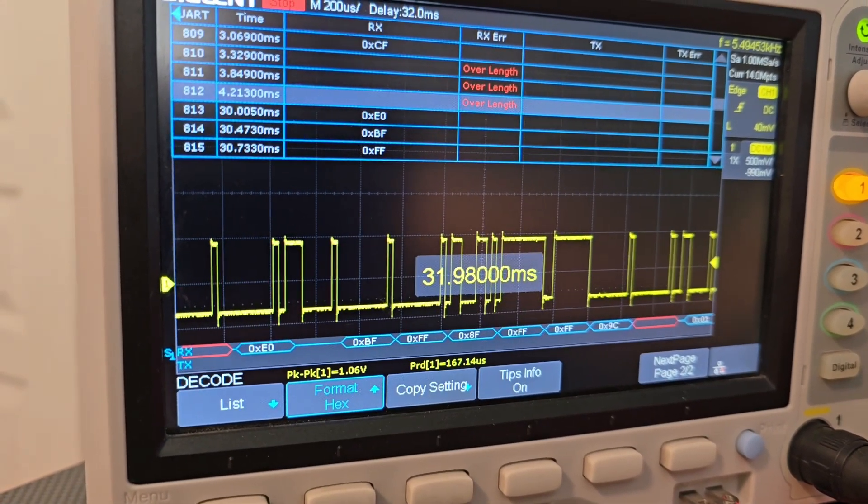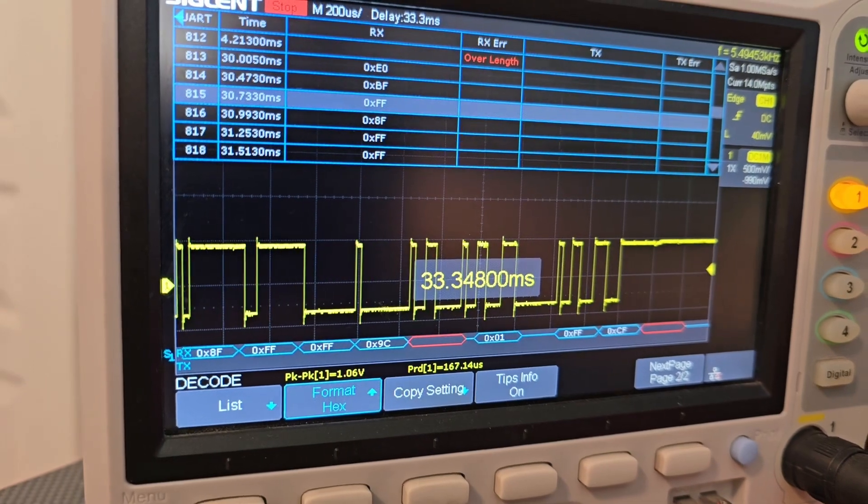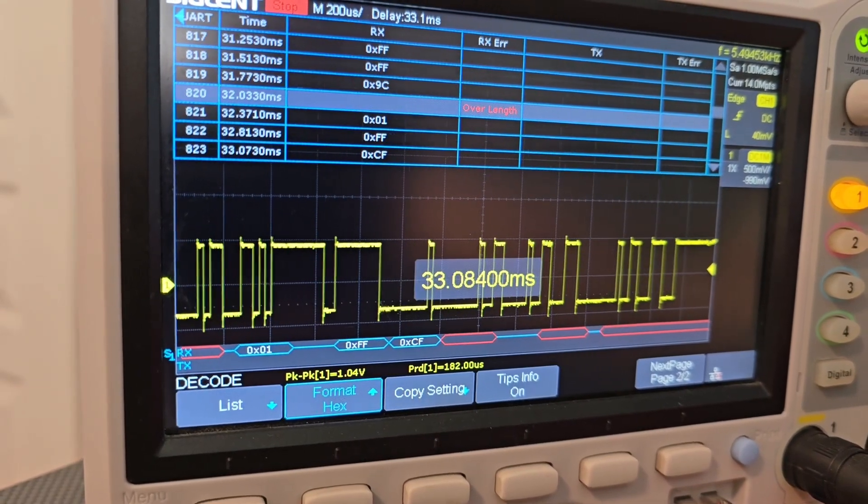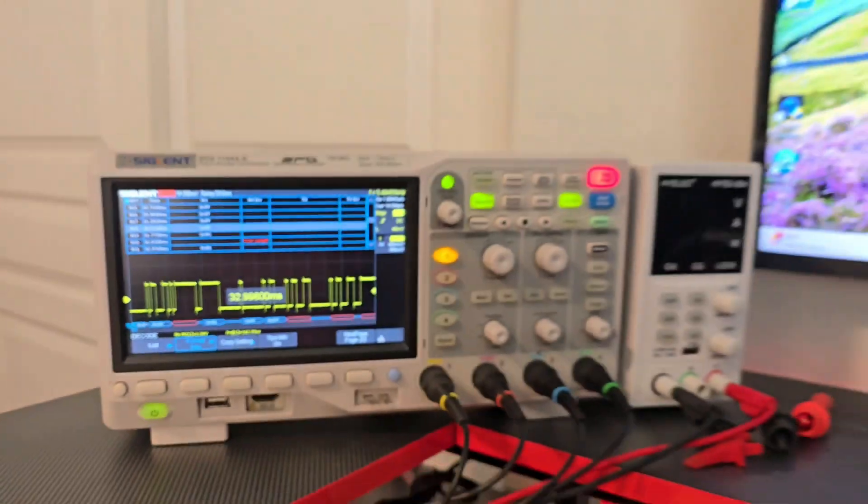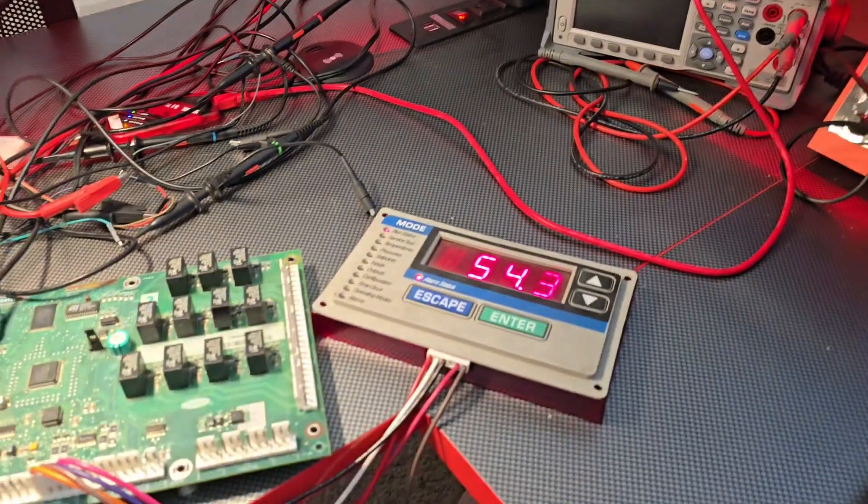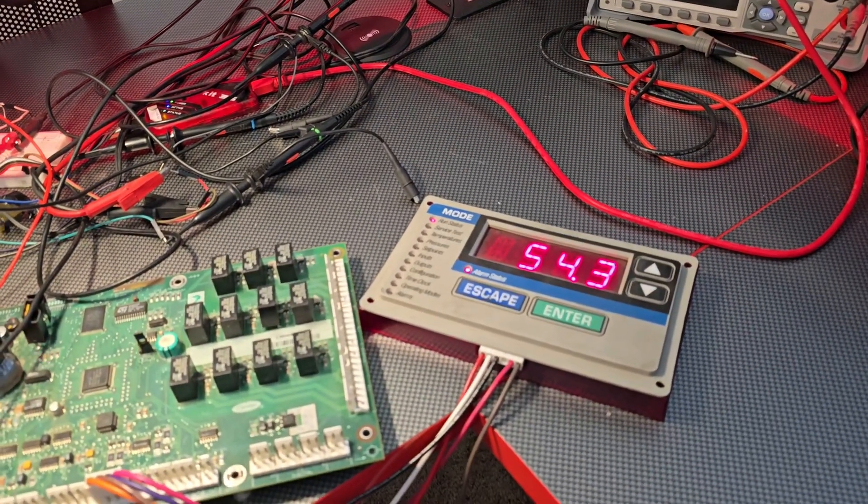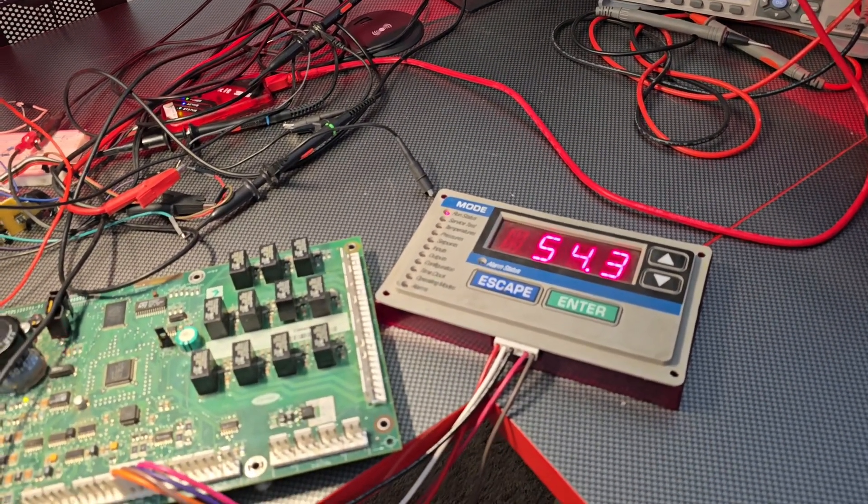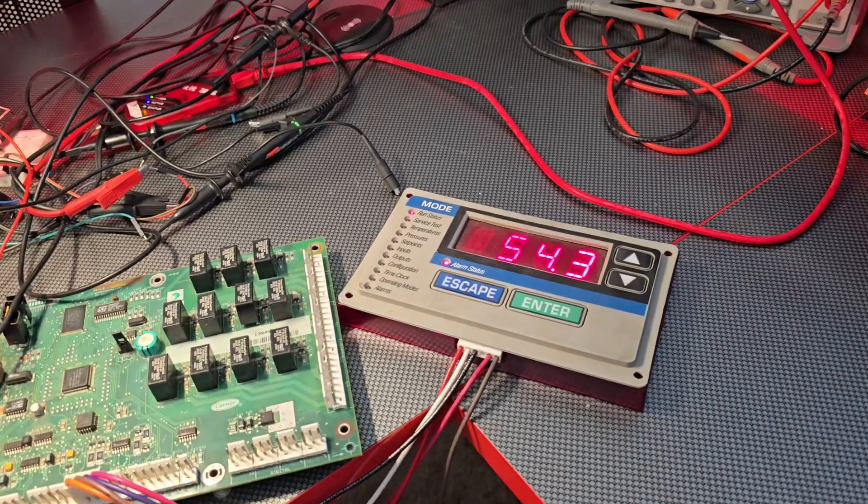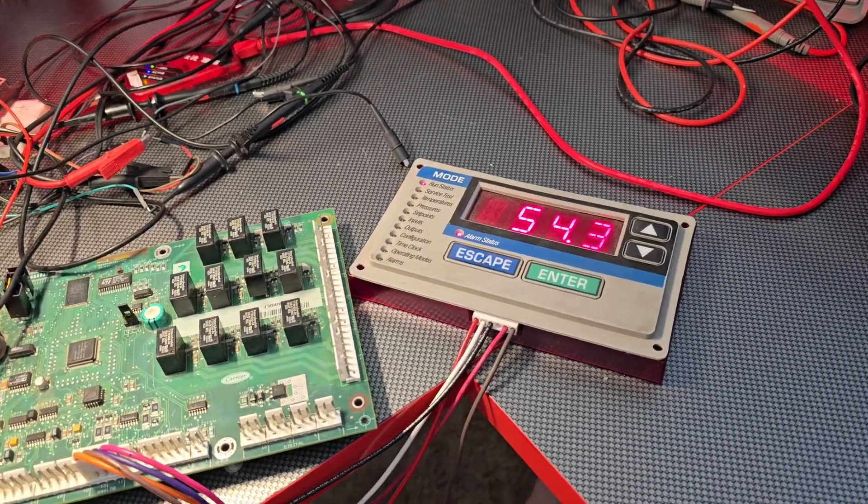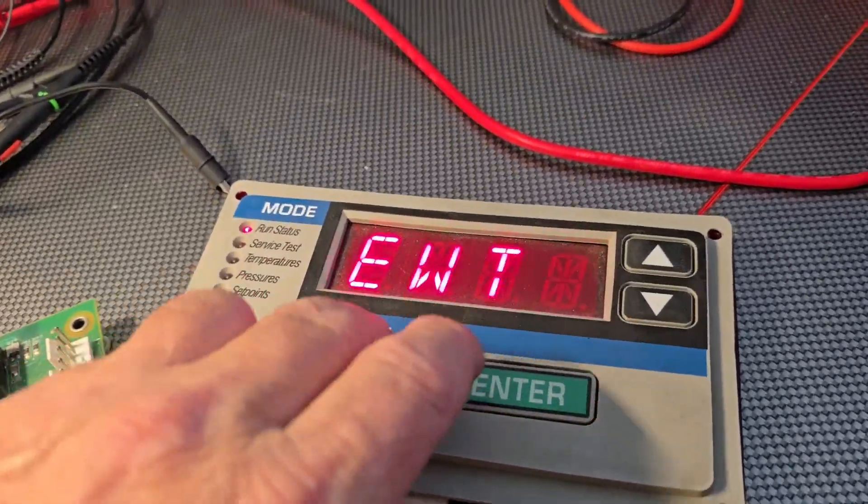So if somebody had a lot of time, maybe they could crack the code. I don't know if they'd get in trouble for doing it, but it would be nice if there was an alternative basic function service tool, just at least to plug in so you could read and clear alarms. Like right now this has alarm...